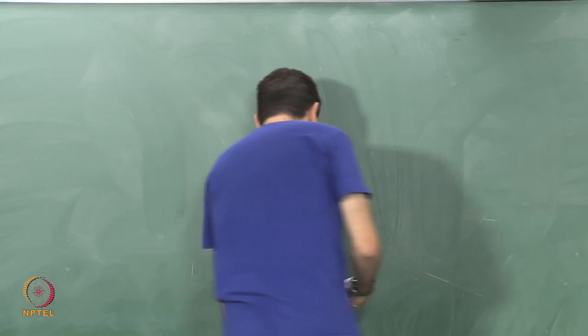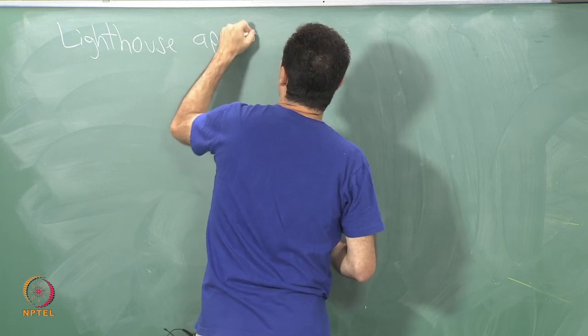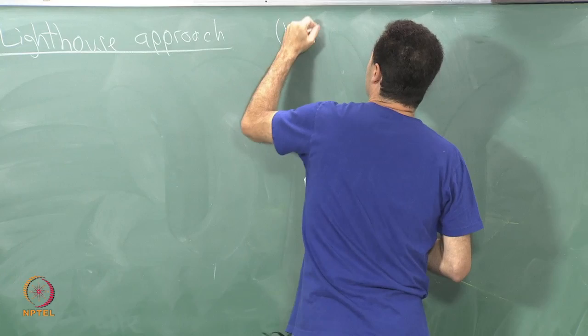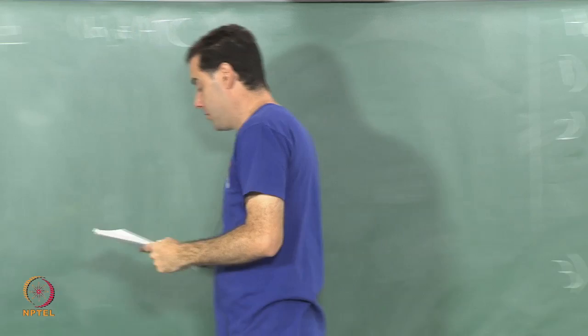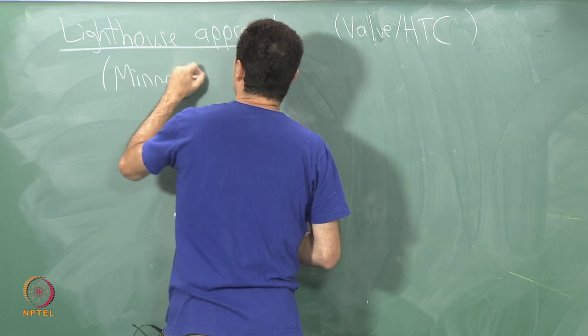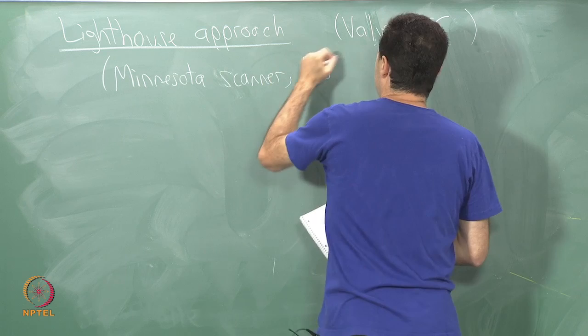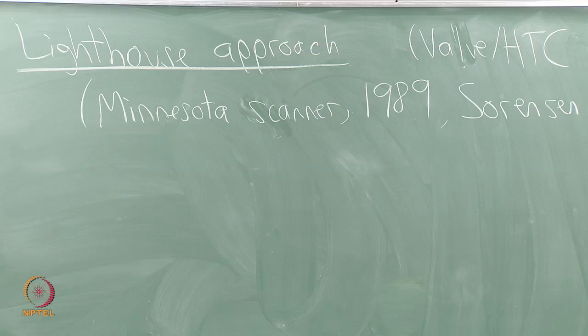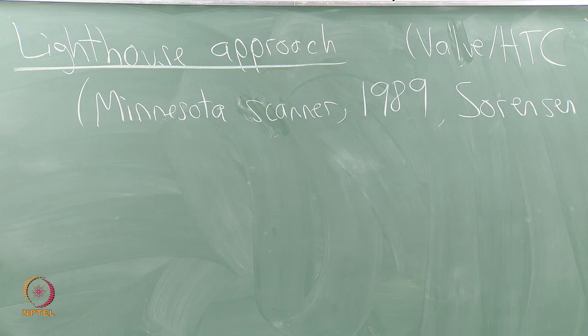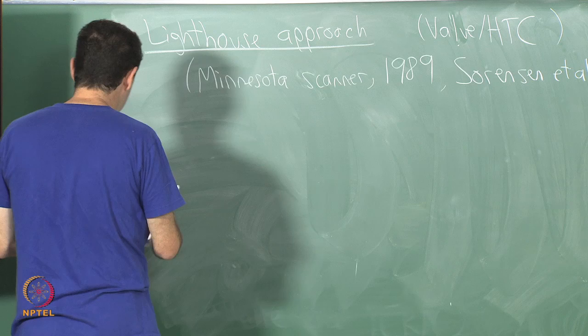Lighthouse approach, you can find this in the current Valve HTC headset. This approach was also called the Minnesota scanner, or one implementation of this, which you can find in a paper. It came up in the robotics literature in 1989 by Sorensen et al. Most of the ideas and engineered systems that are coming up in industry have been around in earlier implementations in previous decades. It's just that they were not feasible in the consumer product realm because the components often were not good enough or there was not enough motivation based on the market.